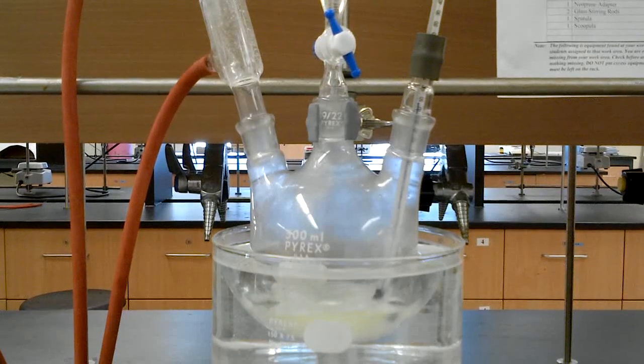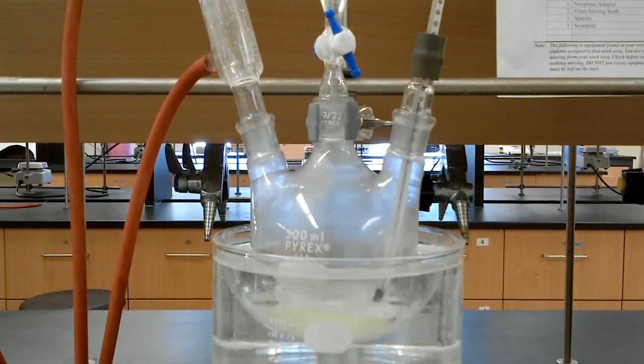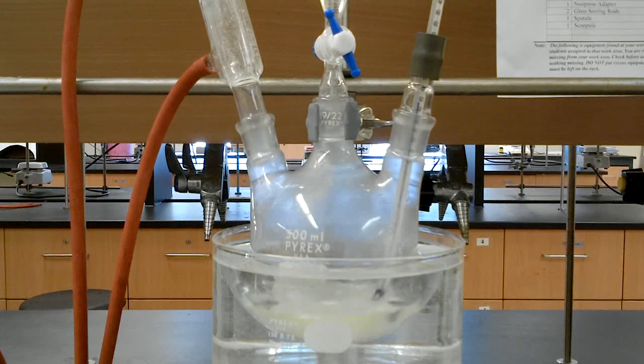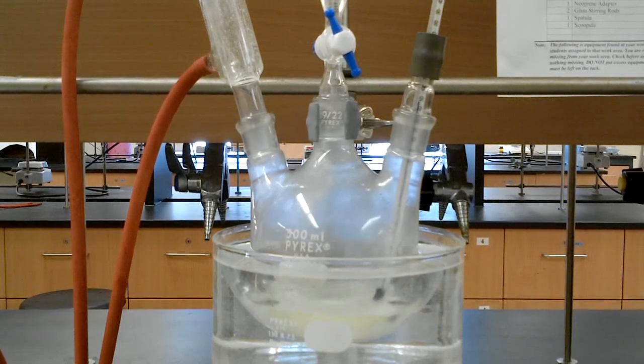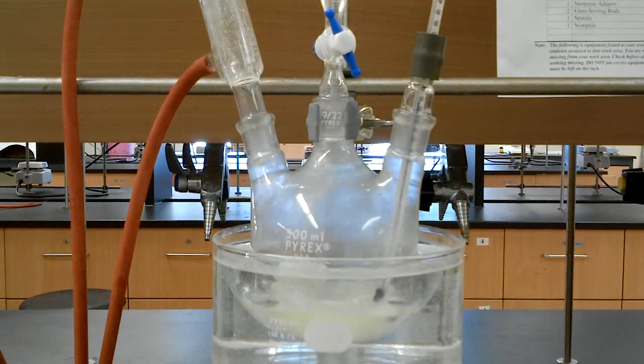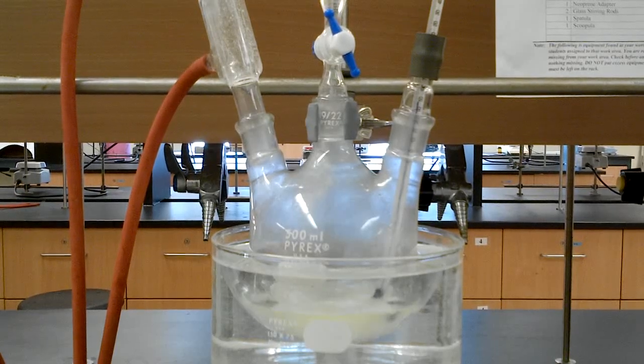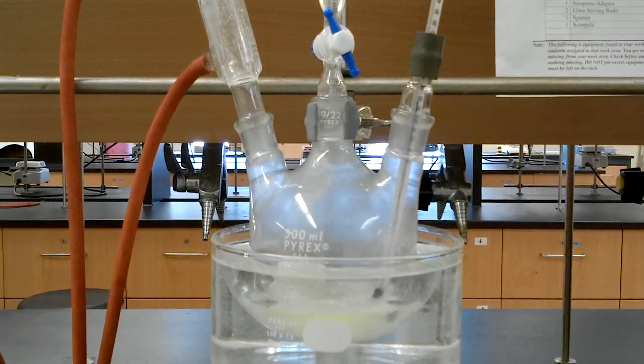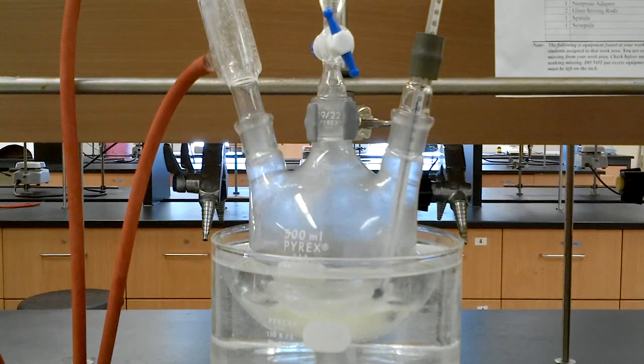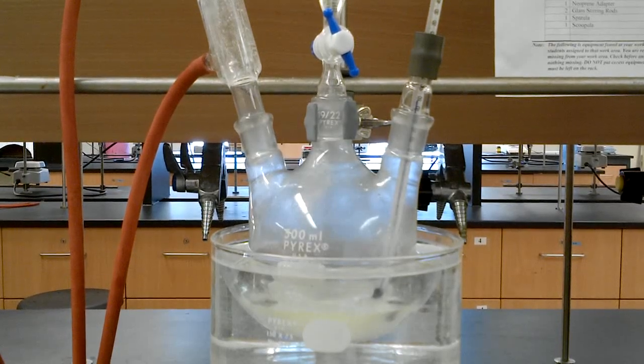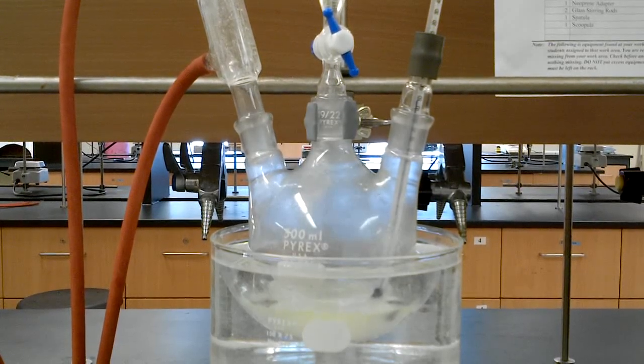So we're keeping the temperature at about 45 to 50 degrees. The warm water bath is helping maintain that. Stirring vigorously. Make sure we've got a good mix on this. And adding at a dropwise rate. Looking good. The color is quite nice. The yellow color is disappearing as fast as it's generated. Excellent.